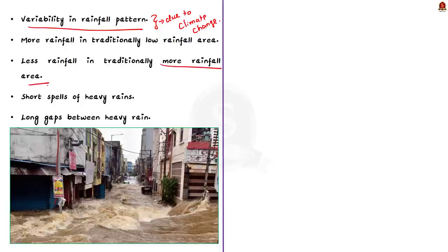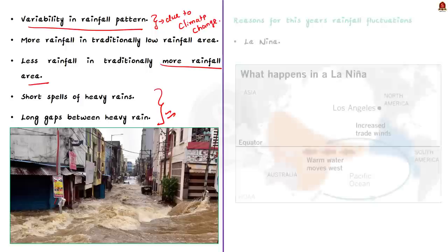Due to climate change, there is huge variability in rainfall within India. Areas that traditionally received good rains are now receiving less rainfall, and areas that did not receive normal rainfall traditionally are receiving excessive rainfall. Additionally, due to climate change, there is an increase in fluctuation of the monsoon, resulting in both long dry periods and short spells of heavy rains.